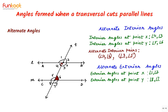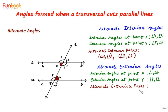Exterior angles at point X are angle 1 and angle 2, and exterior angles at point Y are angle 8 and angle 7. So the alternate exterior pairs are angle 1 and angle 7, and angle 2 and angle 8.